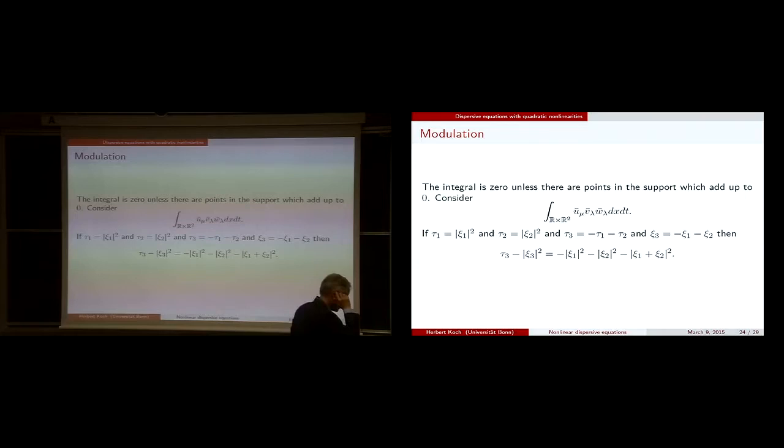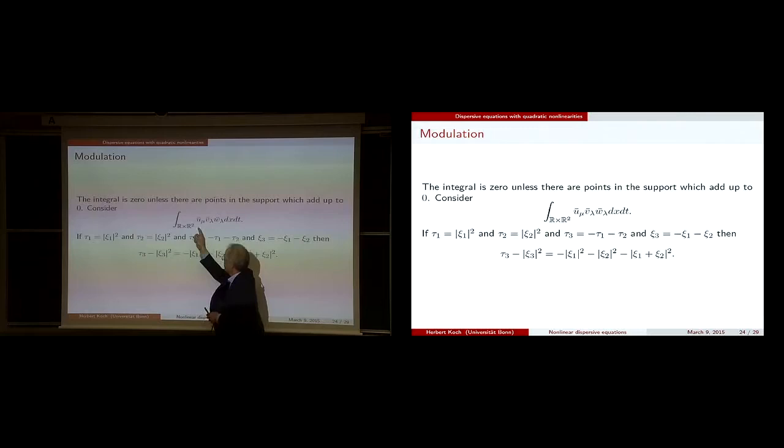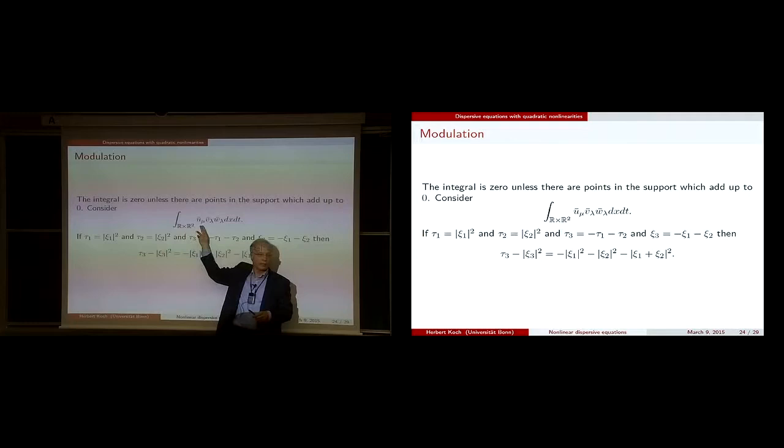So the key insight is: if you decompose these objects on the Fourier side into parts which are close to the parabola and parts which are far from the parabola, we don't get anything if everything is close to the parabola — at least one of them has to be far away (high modulation).